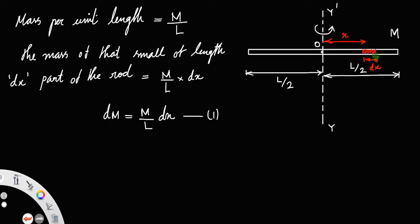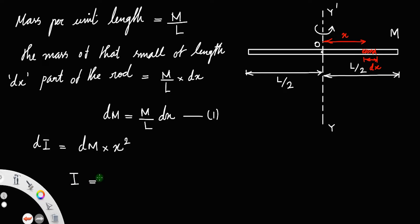The moment of inertia of this small part about this axis, dI, is equal to the mass of that small part into the distance squared. The distance of that mass from the axis is x, so dI = dm·x². In order to get the total moment of inertia I, we must integrate dm·x².